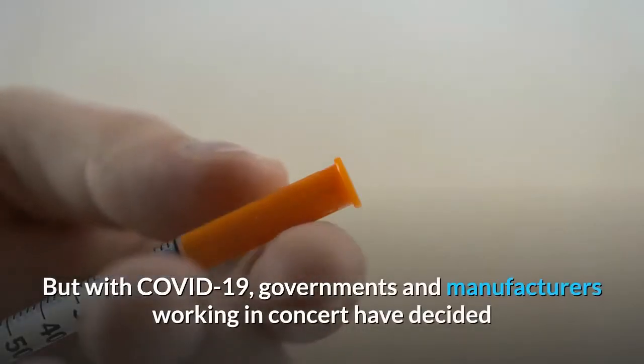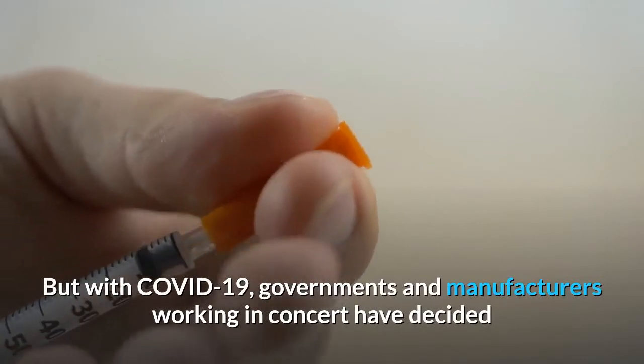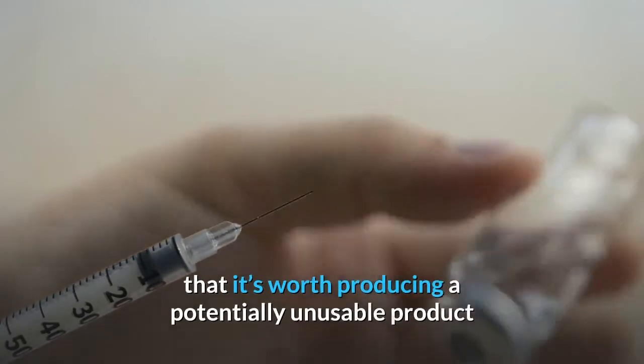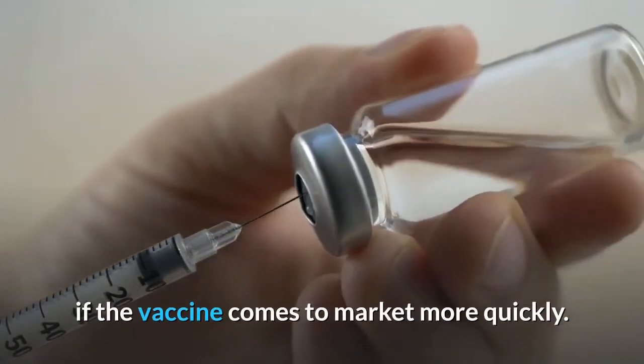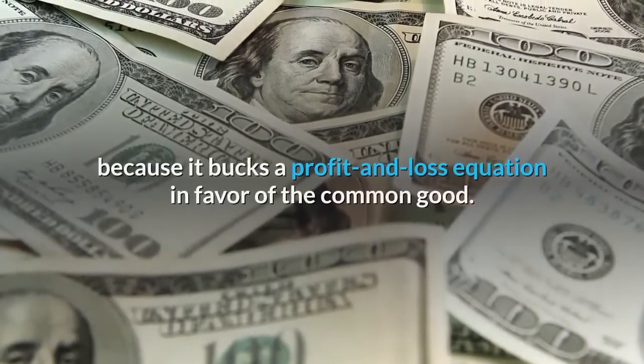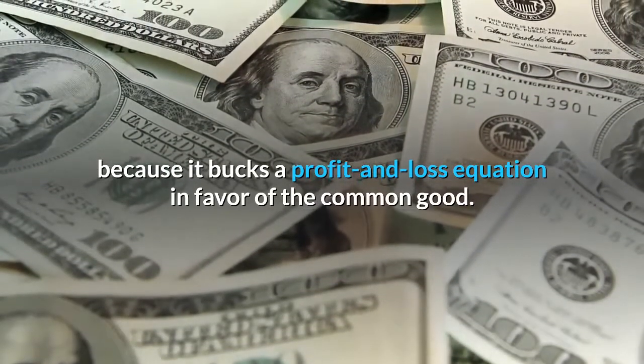But with COVID-19, governments and manufacturers working in concert have decided that it's worth producing a potentially unusable product if the vaccine comes to market more quickly. That's a large shortcut in typical vaccine development because it bucks a profit and loss equation in favor of the common good.